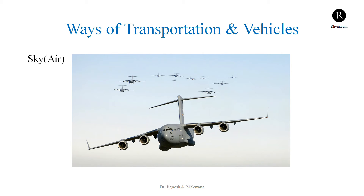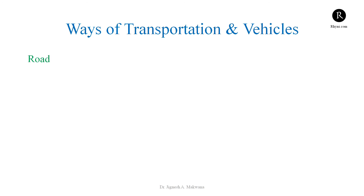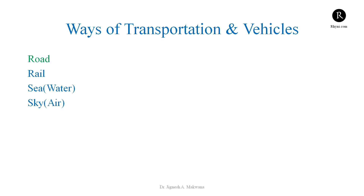Ways of transportation are many. If we list them out, we can have by road, by rail, by sea, or by sky. But here in the automobile industry, we are focused and concentrated on the vehicles that use the road as transportation, and not rail, sea, or sky. So we are restricting our scope — within this course, we are going to deal with road vehicles or road motor vehicles.